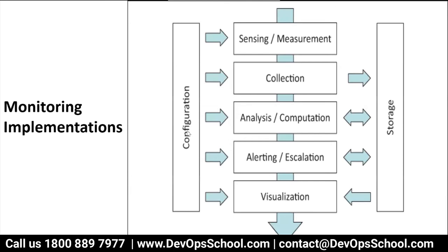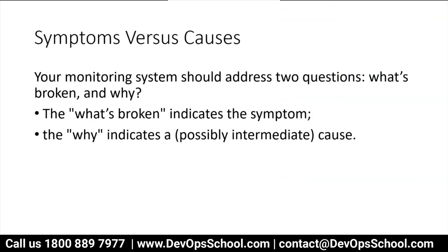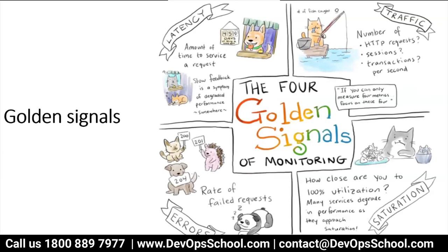When you want to implement monitoring, these are the phases: first, decide what you want to monitor — the measurement; then collect and store that data; then analyze it from storage; then alert and visualize. For all of this — collection, analysis, alerting, and visualization — you need a storage layer where all the data is stored. For example, for CPU monitoring: decide, collect and store, analyze whether CPU goes beyond a threshold, then alert and visualize.